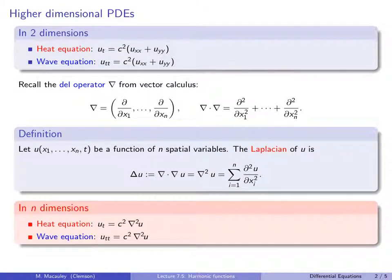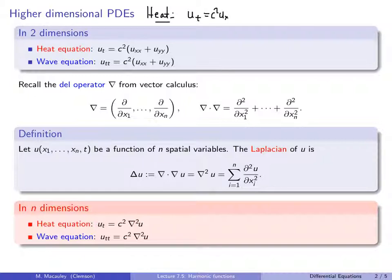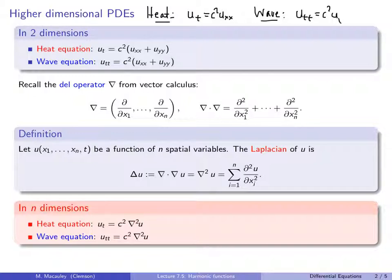I want to start with something that's not on the slide. In one dimension, the heat equation is ut equals c squared uxx, and the wave equation is utt equals c squared uxx. We just learned about these.